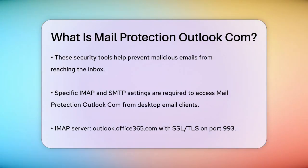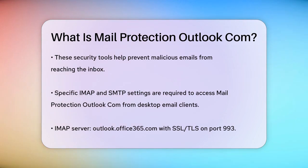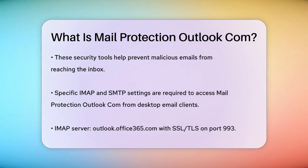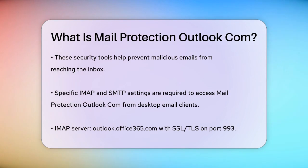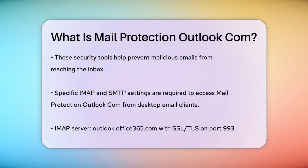To access your Mail Protection Outlook Comm email account from a desktop email client, you need to use specific IMAP and SMTP settings. For example, you would use the IMAP server Outlook.Office365.com with SSL/TLS security on port 993, and the SMTP server SMTP.Office365.com with StartTLS security on port 587.